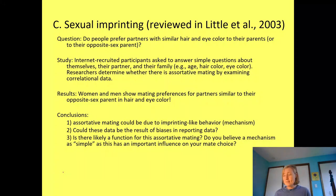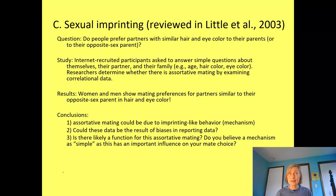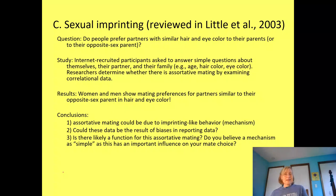For men, both maternal and paternal hair color were significantly positively related to their partner's hair color. Maternal eye color was significantly related to partner eye color, but paternal eye color was not. So men seem to pick partners with eye colors similar to their mom. Assortative mating does appear to be happening here, and the mechanism seems to be imprinting-like behavior — humans imprinting on their opposite-sex parent and choosing a partner similar to them.